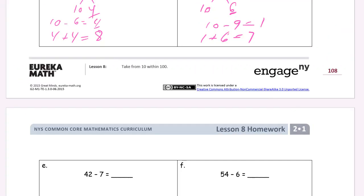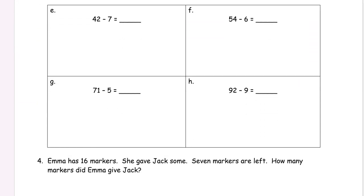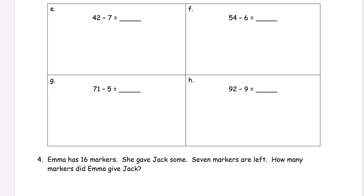42 minus 7. Remember we practiced taking 10 out of larger numbers in the beginning. Now we're going to come back and use that with the parts of 10. 42, remember that was 10 and 32. 10 minus 7 equals 3. And now we're going to add the 32 and the 3. We're just kind of looking at this right here. The 2 and the 3, that's going to be 5. And the 10's digit is going to stay the same. So it's going to be 35. That's adding the 1's and then adding the 10's.